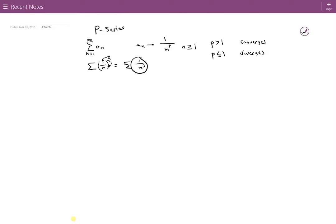So our p value is this 3 here. So since 3 is greater than 1, this series is going to converge by p-series. Pretty straightforward.